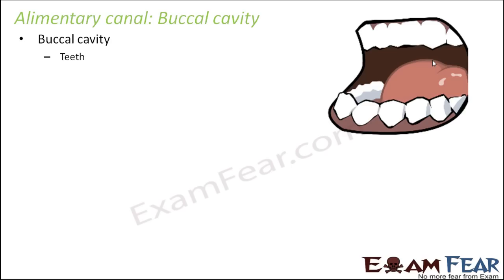Inside the buccal cavity, there are many different parts which play an important role in the process of digestion. One of them is the teeth. Another is saliva — the watery substance you always feel inside your mouth, especially when you see tasty food and your mouth starts to water. The third is the tongue. These three parts — teeth, saliva, and tongue — are all located in the buccal cavity and play a very important role in digestion.